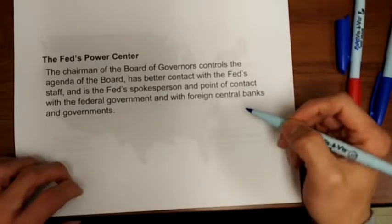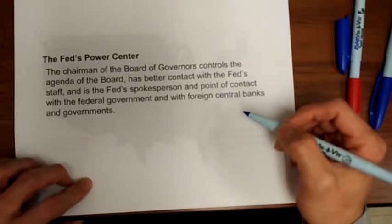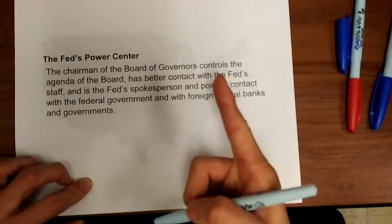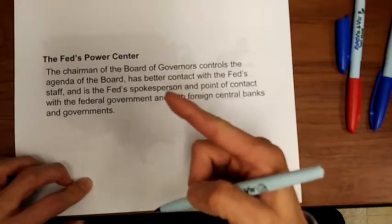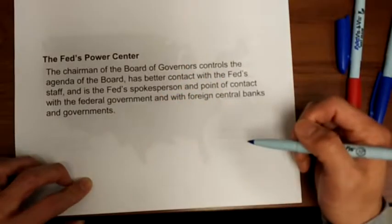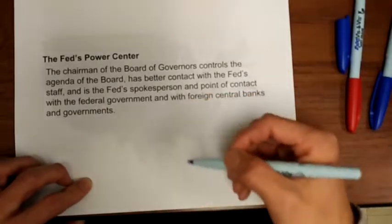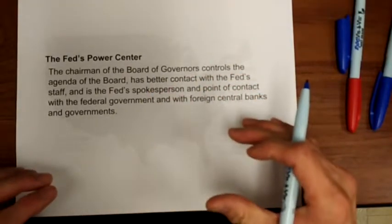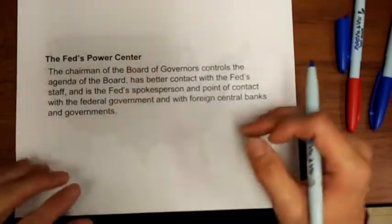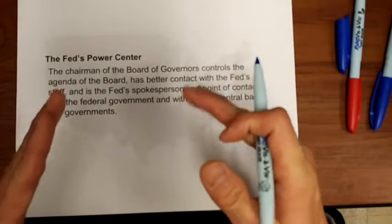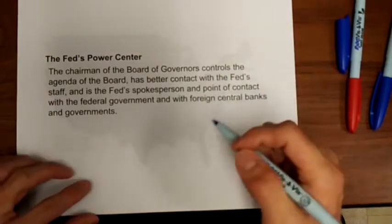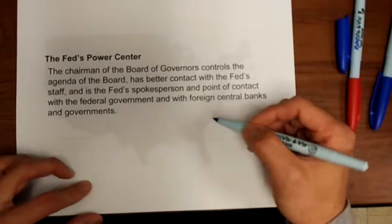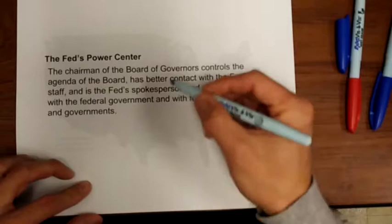The U.S. central banking system is very special because we don't have a single central bank — Americans do not like centralized power. Therefore, we have a system. However, within this decentralized system, there is a centralized power, because if a system is totally decentralized, there will be an efficiency problem.